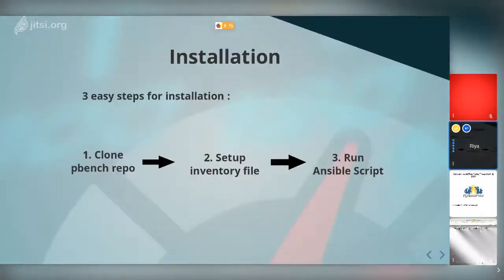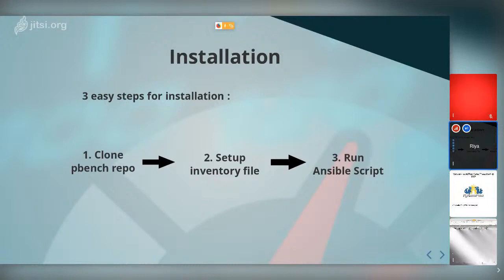There are three easy installation steps for pbench: first, clone the pbench wrapper; then set up an inventory file; and run the Ansible scripts. We can clone the pbench wrapper from GitHub, and then set up the inventory file — we have provided all the steps for how to do that. The Ansible scripts contain all roles and configuration files needed to set up everything, and running them gives us all the parts and configuration needed to run pbench.